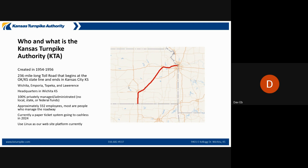Currently, we utilize a paper ticketing system. When you enter one of our plazas on the turnpike, you stop and get a ticket. That ticket is good for that entrance point. You keep it in your car, drive to whatever exit point you want, then put the ticket into the automated payment machines, which calculate where you got on, where you got off, and give you a toll amount to pay.